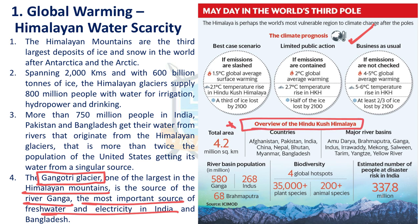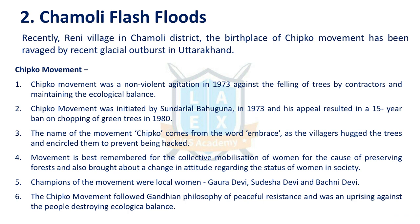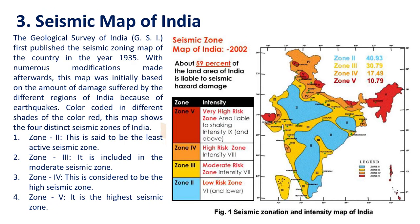The next issue is the Chamoli Flash Floods. Chamoli district of Uttarakhand has seen flash floods. This district is famous for the Chipko Movement. The Chipko Movement is a non-violent, peaceful agitation that started in 1973 against tree felling by contractors. Chipko means embracing; it was initiated by Sundarlal Bahuguna, with many women participating. It followed Gandhian philosophy of peaceful resistance and was an uprising against ecological destruction. The Chamoli flash floods were due to avalanches in the upper reaches and cumulonimbus clouds leading to cloudbursts.